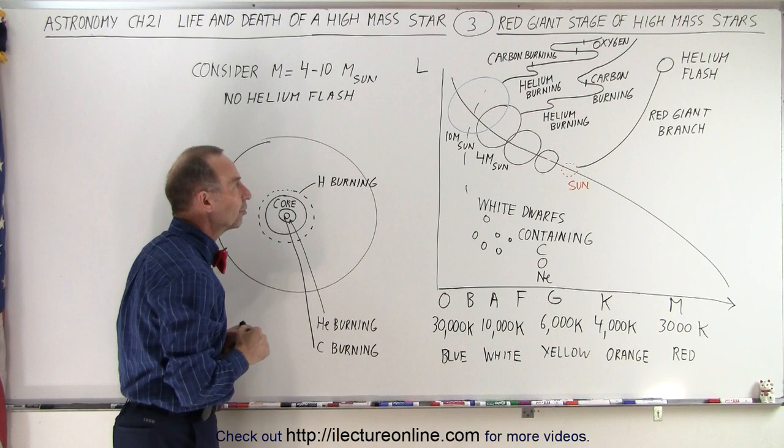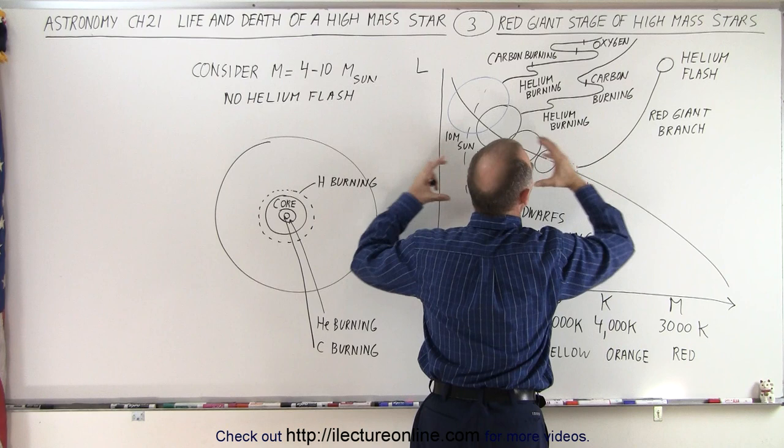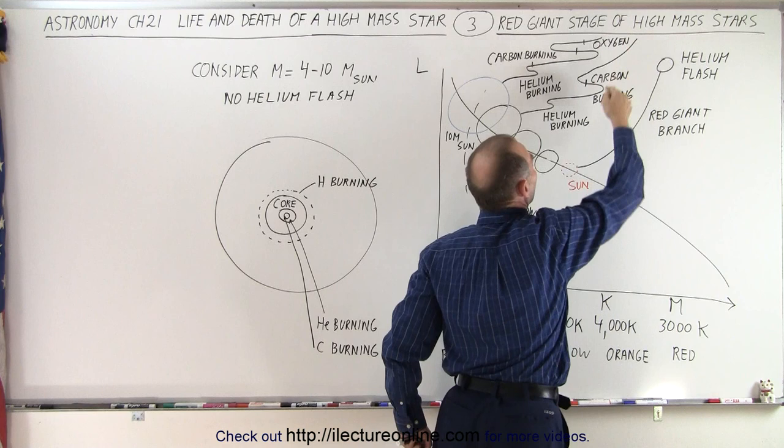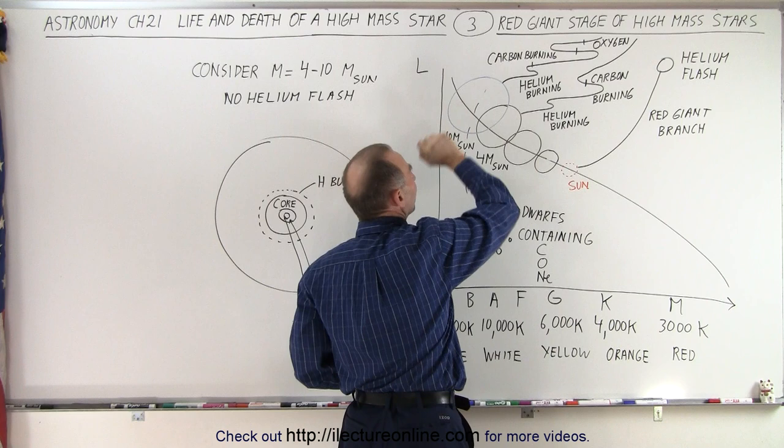helium begins to burn into carbon, and then at even higher temperatures at the core, carbon begins to burn into oxygen, and that's why you have these various changes in the size and the temperature of the surface of the star until it goes up the red giant branch to become a genuine red giant star.